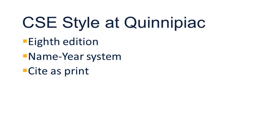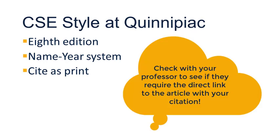At Quinnipiac, we use the 8th edition, published in 2014. CSE's style has three systems for formatting citations. Quinnipiac uses the name-year system. We cite journal articles and book selections as if they were the print version. Some professors may require a direct link to the article along with the print citation.